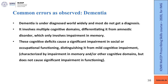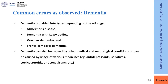Common errors in dementia: dementia is underdiagnosed worldwide and most patients do not get a diagnosis. It involves multiple cognitive domains, which differentiates it from amnestic disorder that only involves memory impairment. These cognitive defects cause significant impairment in social and occupational functioning, distinguishing dementia from mild cognitive impairment. Dementia can be divided into Alzheimer's disease, dementia with Lewy bodies, vascular dementia, and frontotemporal dementia.